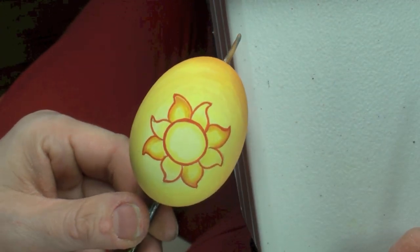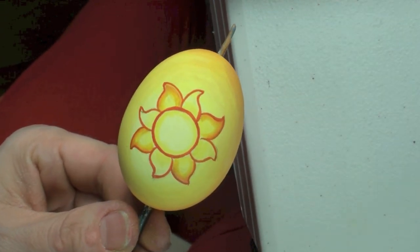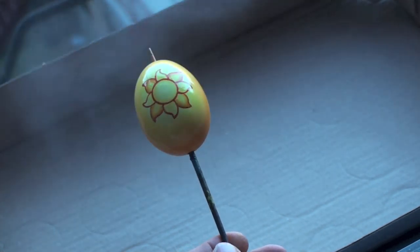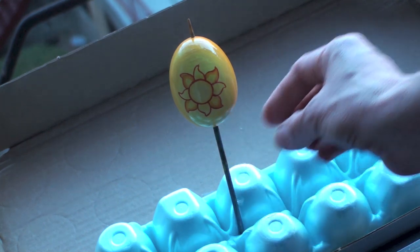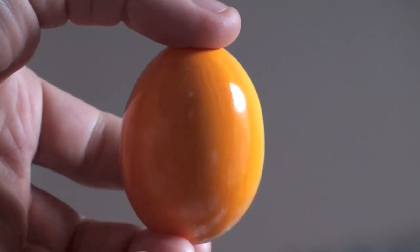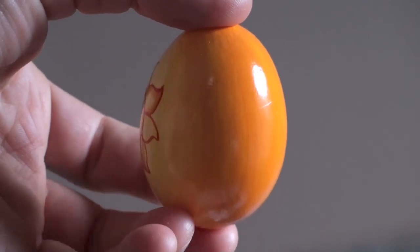And with this, we're done with our painting. At this point, you can use an acrylic sealer to protect the paint on the egg and give it a nice shine. Once it has dried, you will have yourself a very unique and beautiful Easter egg. Thank you for watching and hope to see you soon in another video.